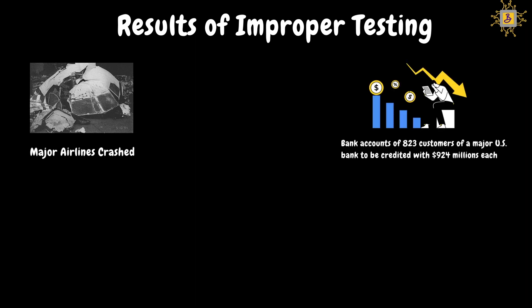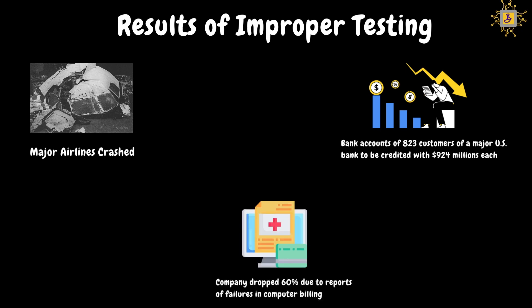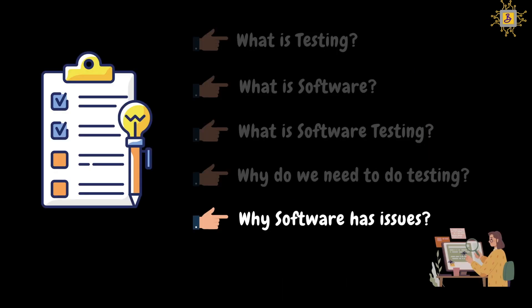In another example, in a major US bank in May 1996, 823 customers had $924,000,000 incorrectly credited to their accounts — again a software issue. In November 1997, a major health industry company's stock dropped 60% due to failures in a computer billing system. These real incidents show why software testing is so important. I will share the article link in this video description for those interested.